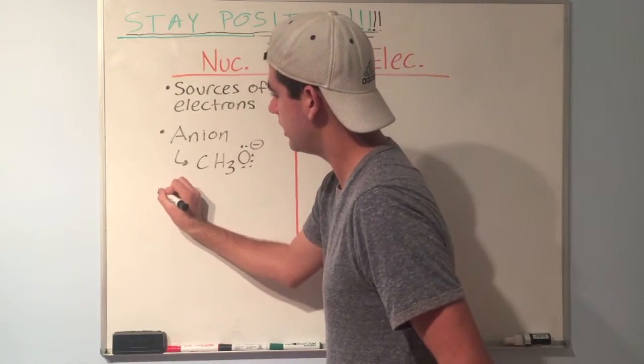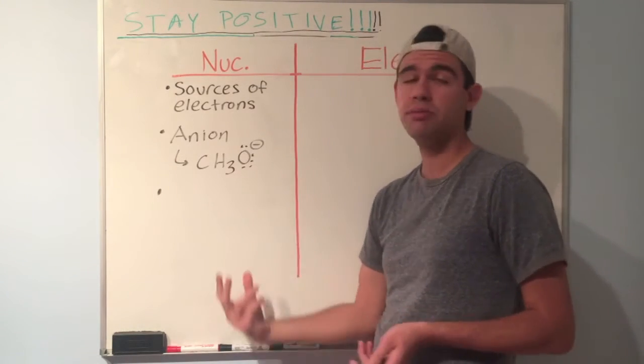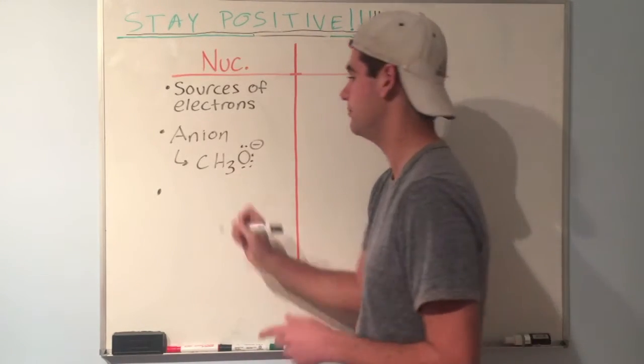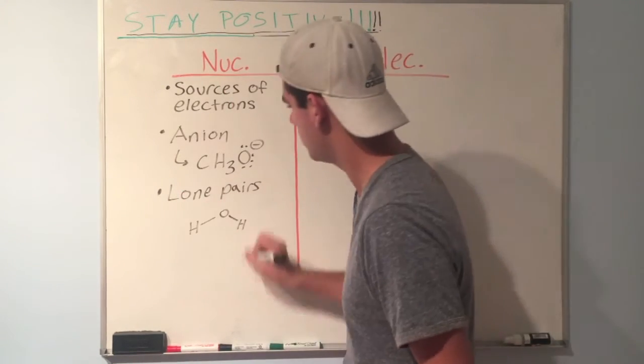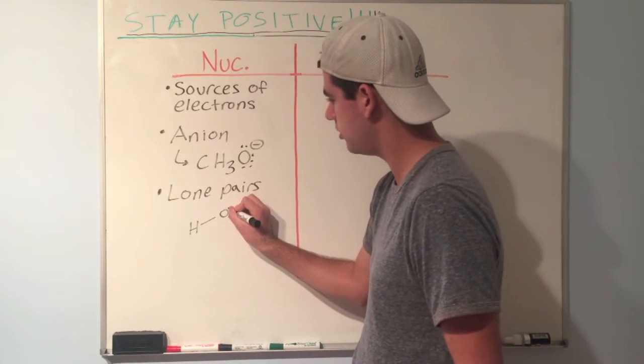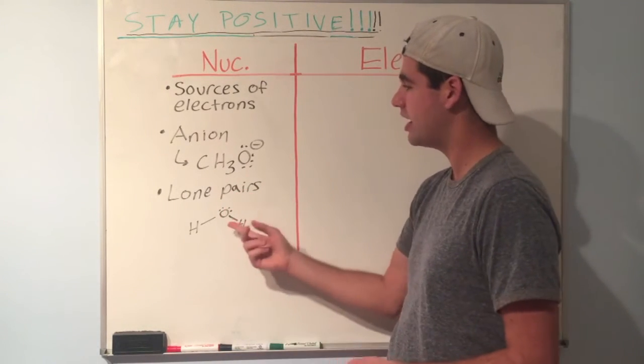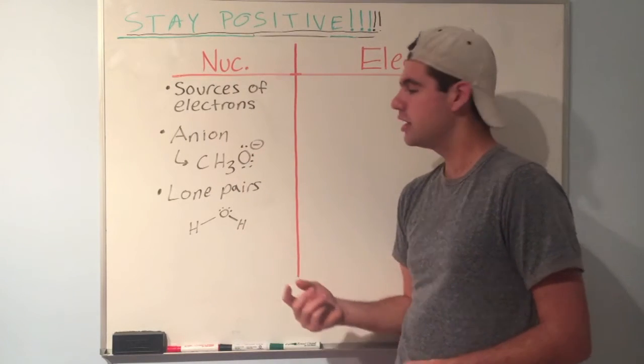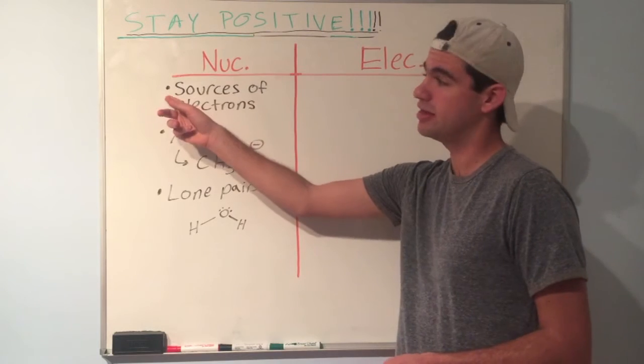What else can be nucleophilic? Well, let's say you have a neutral molecule, but within that neutral molecule, you have lone pairs. Those can be nucleophilic. So lone pairs. An example might be water, H2O. This oxygen right here has two lone pairs. So is it a great nucleophile? Not the greatest. It's definitely not as strong as a full negative charge, but it is nucleophilic because it's a source of electrons. Going back to this definition right here.